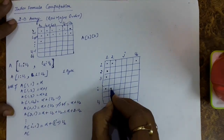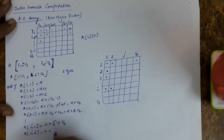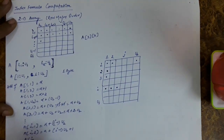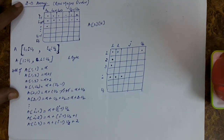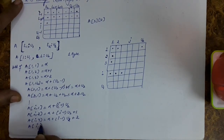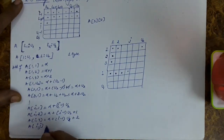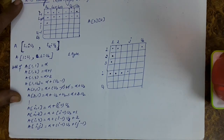Now, for a[i][j] — the j-th element within the i-th row — it is one more than the first element of that row for each column step. So the address of a[i][j] = alpha + (i - 1)*U2 + (j - 1). This is the preliminary formula, derived under our two simplifying assumptions.